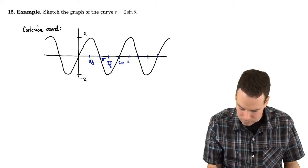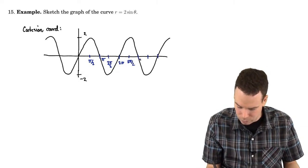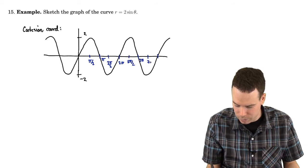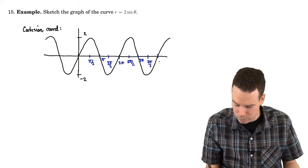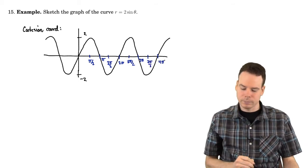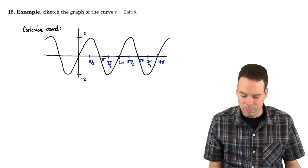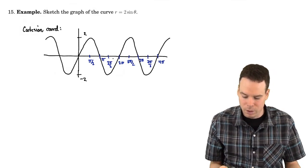So maybe I'll do a few more. So this is 5 pi by 2, 3 pi, 7 pi by 2, and 4 pi. Now that gives me information about how theta and r are related.